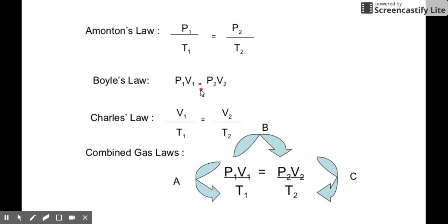Now, what if the three variables — pressure, temperature, and volume — all vary? There are initial and final states for that. Yes, it is possible. If you change all three variables, you just have to ensure that the amount of your gas remains constant. When we combine the three gas laws that we discussed, we call that the Combined Gas Law.